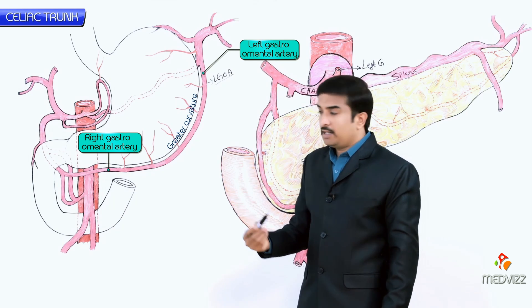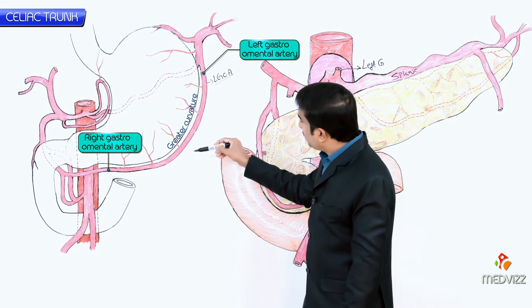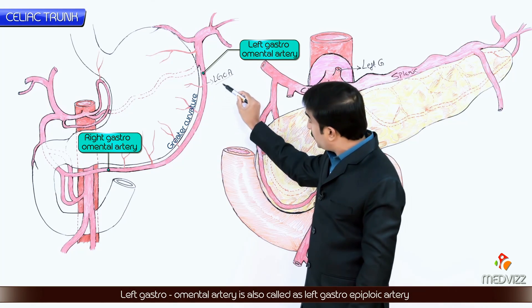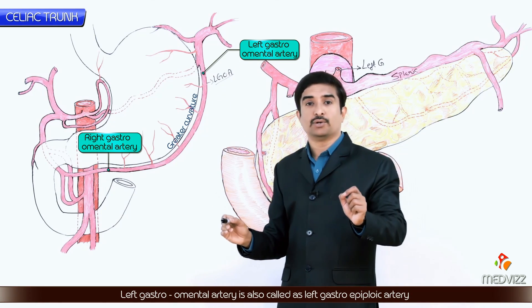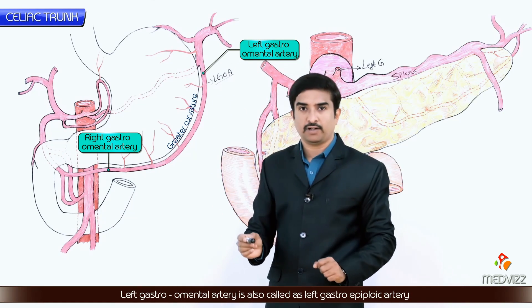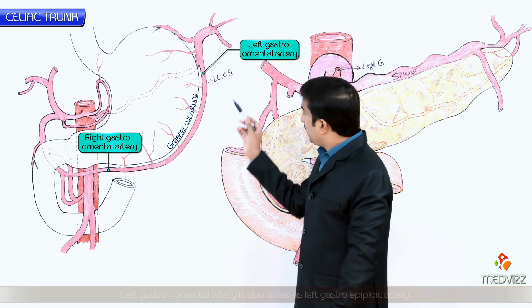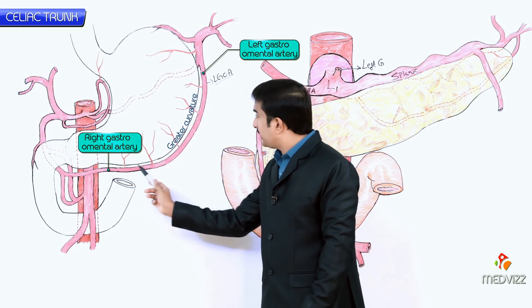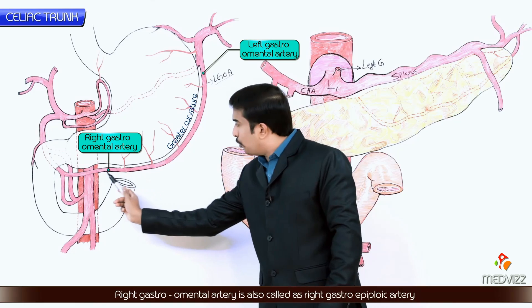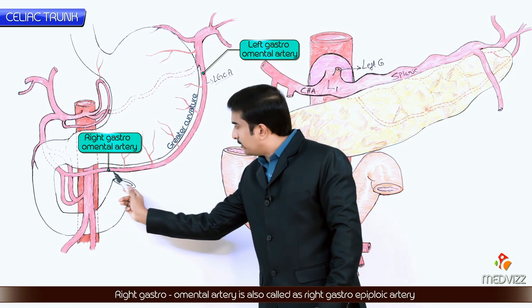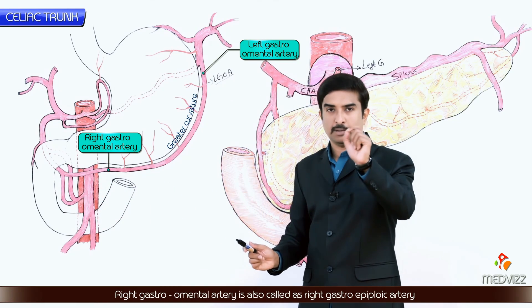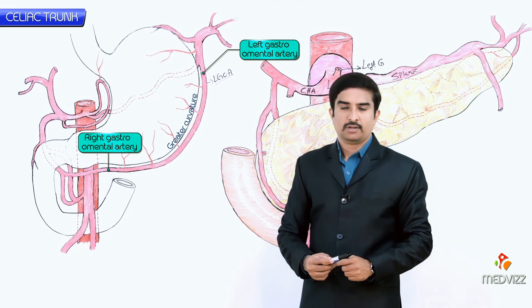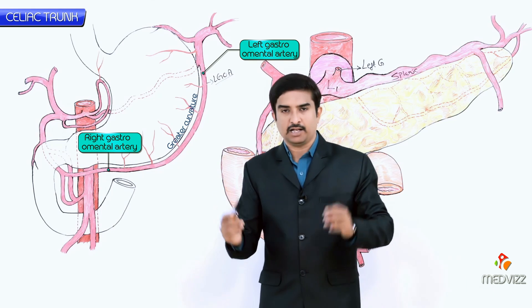The upper part of the greater curvature is supplied by the left gastro-omental artery, also called the left gastroepiploic artery, while the lower part of the greater curvature is supplied by the right gastro-omental artery, also called the right gastroepiploic artery.